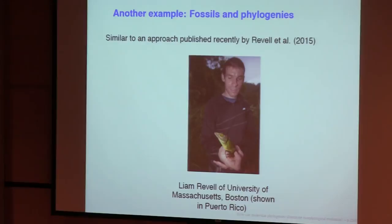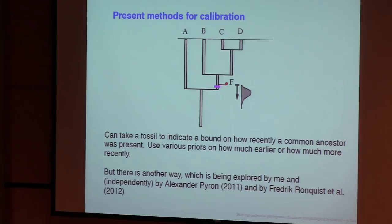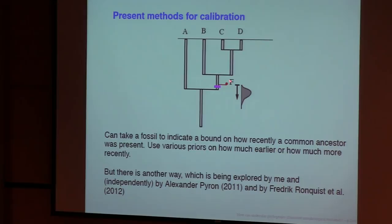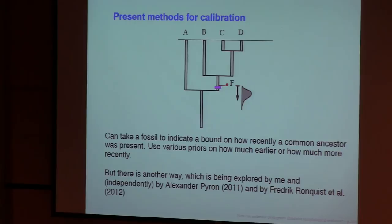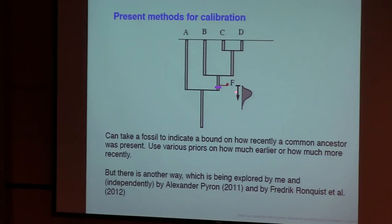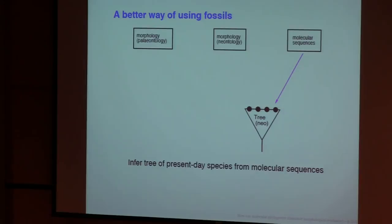There is an existing method, there's some nice statistical work done by Alexander Pyron and by Fredrik Ronquist using, both using Bayesian methods, for discrete characters in which you take a phylogeny and then you ask about the origins of these discrete characters. I'm not going to describe it because I'm going to get a very different framework that Liam and I have used.